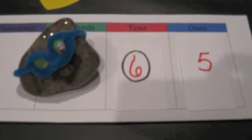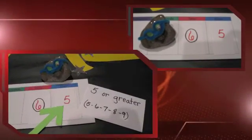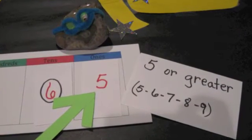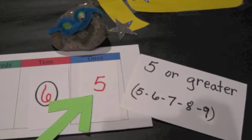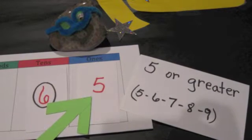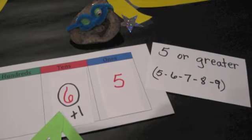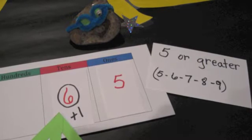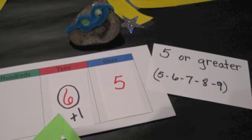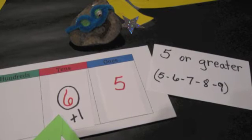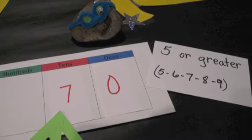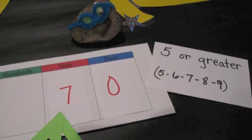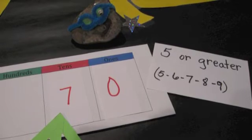And then we look at the digit to the right. If that digit is five or greater, we add a one to the circled digit. Replace all the digits after the circled digit with zeros. Six plus one becomes seven and the five becomes a zero. Our rounded number is 70.